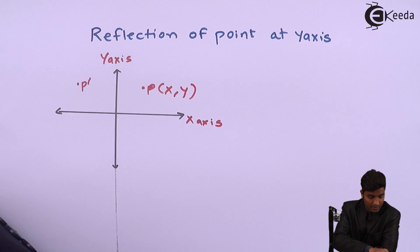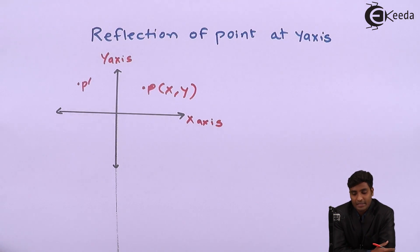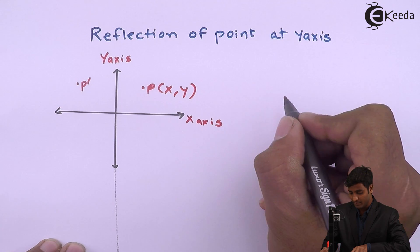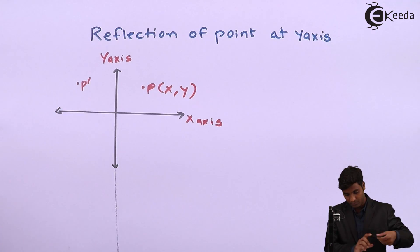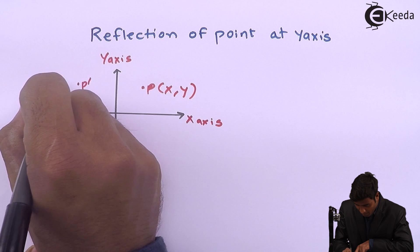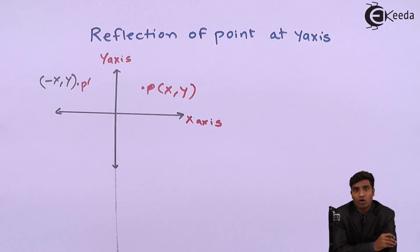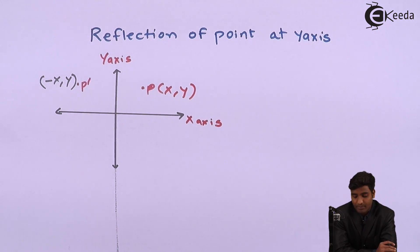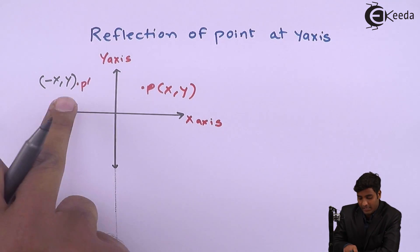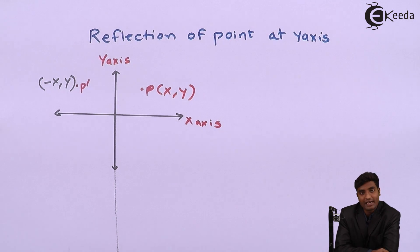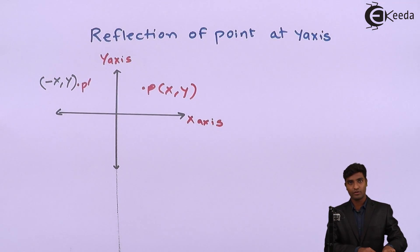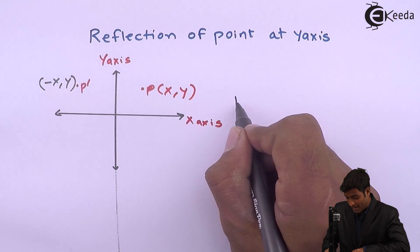After reflection about the y-axis, the point P-dash becomes (-x, y). The magnitude of both x and y remains the same — only the sign of the x-coordinate changes. The y-coordinate remains the same. So after reflection of a point about the y-axis, the sign of x changes and y stays the same. Now I will prove this.